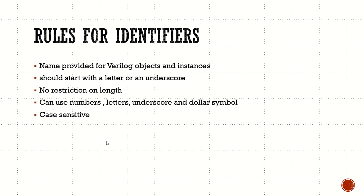In the later characters — not the first — we can use numbers, letters, underscores, and the dollar symbol. We should not use other symbols even in later characters. Identifiers are case sensitive: capital 'ABC' and small 'abc' are different identifiers. It is not good practice to use both 'ABC' and 'abc' in the same design, as it will lead to confusion.